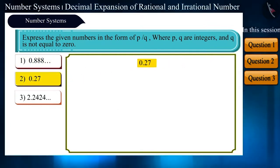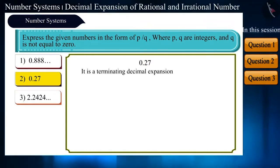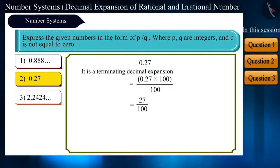Let's take the second number, 0.27. It is very easy to write it in the form of a fraction. This is a terminating decimal expansion. There is no repetition of any number or group of numbers. Here, because there are only two numbers after the decimal, we will multiply by 100 and divide by 100. And now, we will get 27 by 100, which is the fraction form of this number.